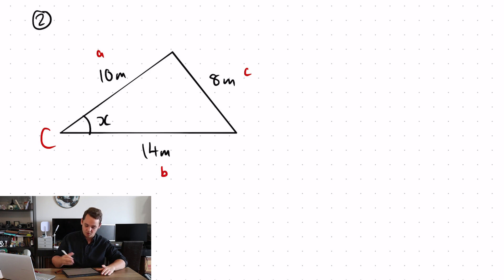Now, putting it into my formula, I get cos X is equal to 10 squared plus 14 squared minus 8 squared all over 2 lots of 10 times 14.